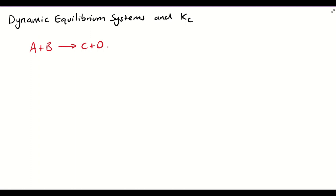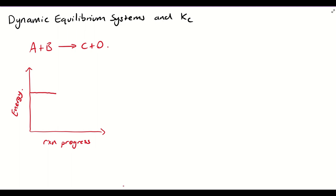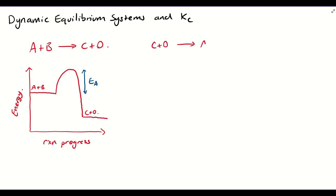We're going to draw an energy profile diagram to see what's going on. On the x-axis we have reaction progress, and on the y-axis we have energy. Our reactants A and B have some energy up here, and our products C and D have lower energy down here. The important thing to note is that this distance here is the activation energy — the energy we need to overcome in order to form C and D from A and B.